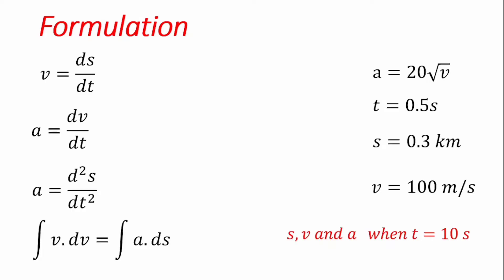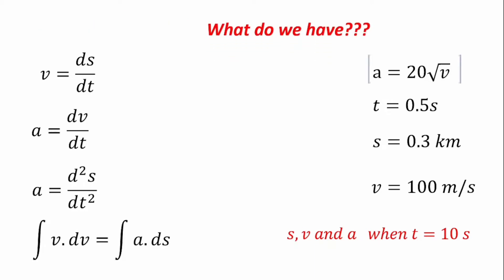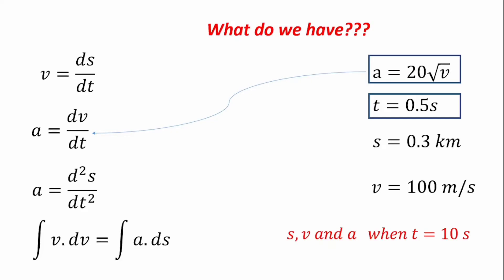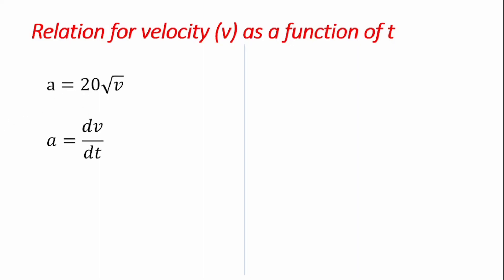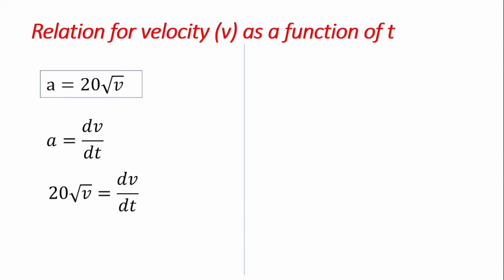We'll work with velocity first. We have a relationship between acceleration and velocity, and another relation between acceleration, velocity, and time. Since the question gives us a value for time and a value for velocity, we can use both to derive velocity as a function of time. We substitute a equal to 20 root v into the relation a equals dv/dt to get 20 root v equals dv/dt.